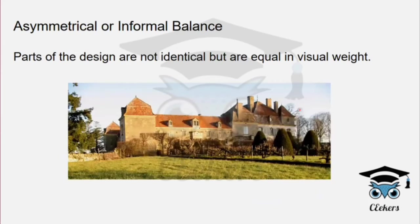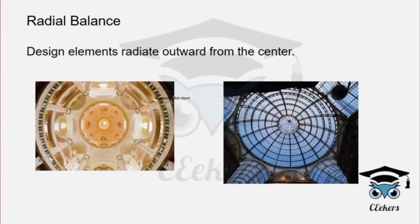Asymmetrical or informal balance requires correcting the center line. The elements are not identical on both sides, but still achieve visual balance. Radial balance is circular — elements radiate from the center.